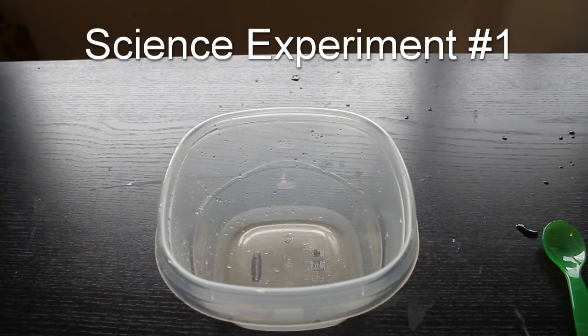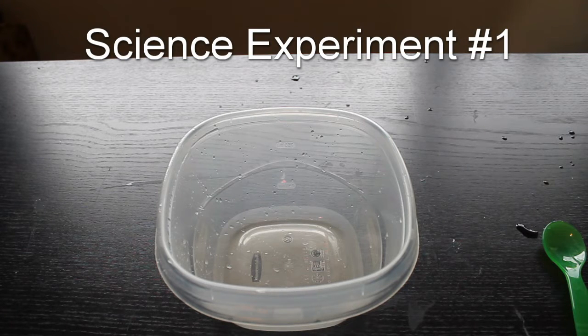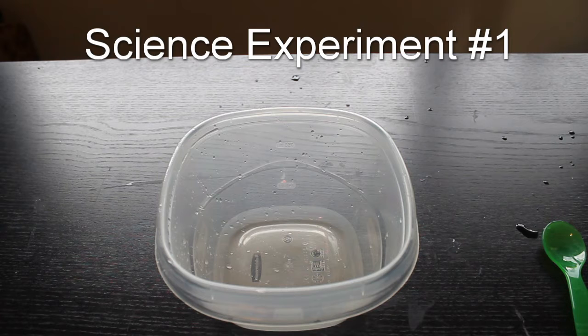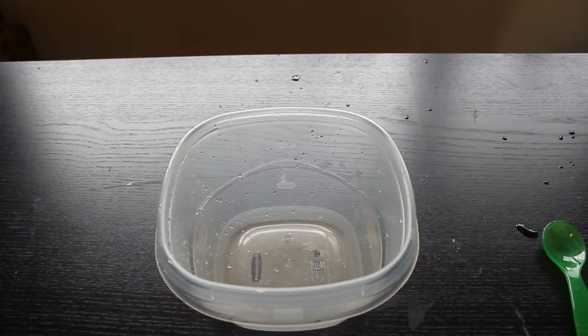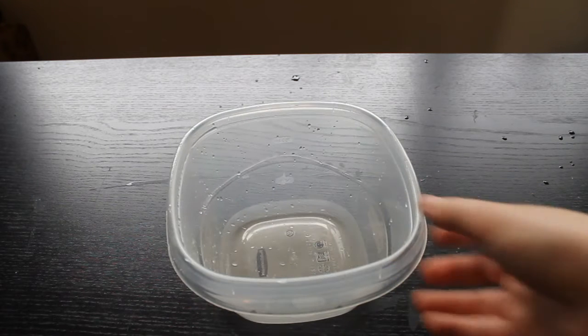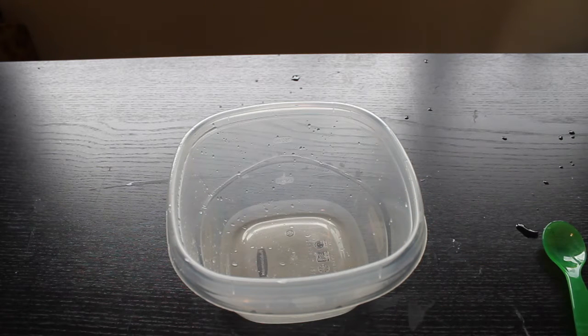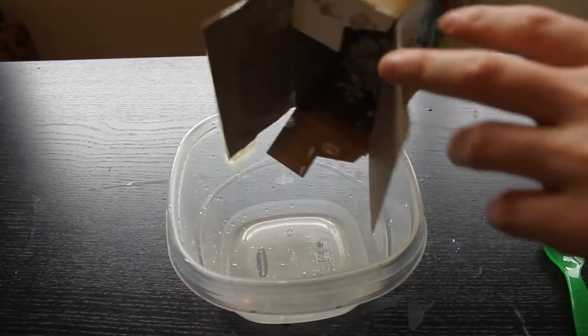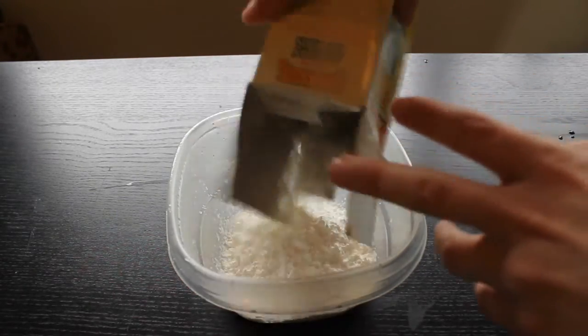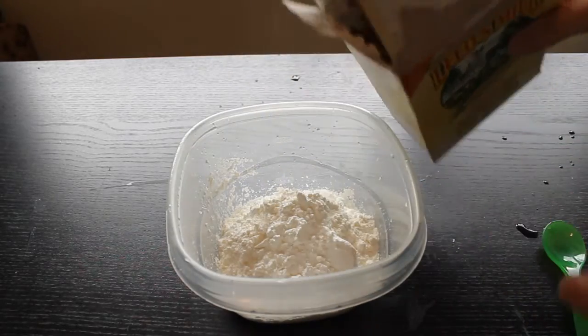All right, this experiment is a super fun one. This is probably one of my favorite ones. And it's super easy to do. Because all you're going to do is you're going to get a container like this, or a bowl, anything you have. And you're just going to add some corn starch. I got this corn starch from the dollar store. You can add as much as you'd like.